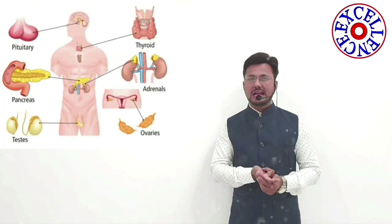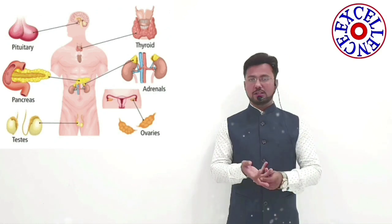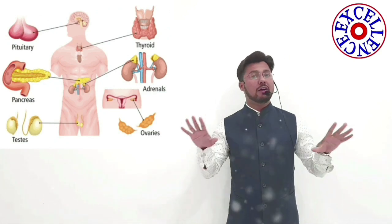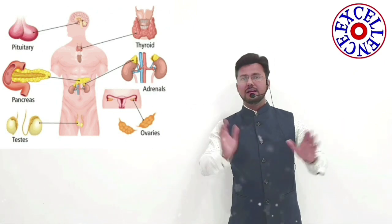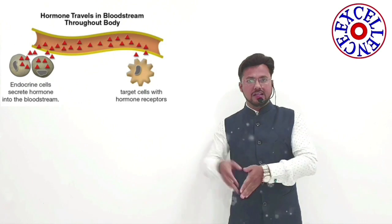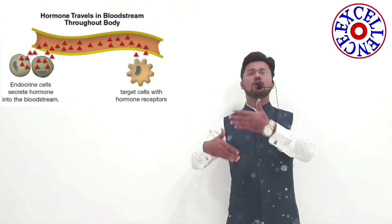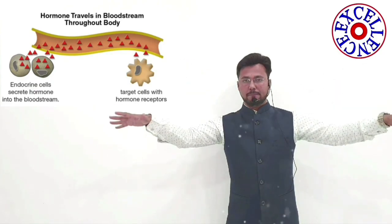On the other hand, endocrine glands include the pituitary gland, the thyroid gland, the adrenal gland, and the gonads — that includes the testes and ovaries. They do not have any duct system that carries their secretion. These kinds of glands release their secretion into the bloodstream, and with the flow of blood it reaches to the different parts of the body.